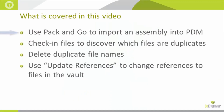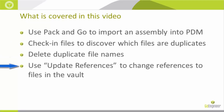I will be using Pack and Go to import an assembly into PDM, then I will check in those files to discover which files are duplicates. Once I discover the duplicate files I will delete them, and then finally I will use Update References to change the references of the imported assembly to files that are inside of the same vault.